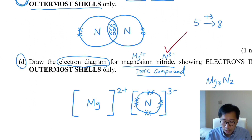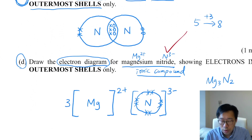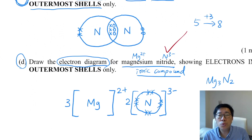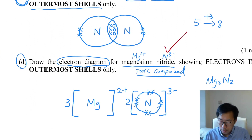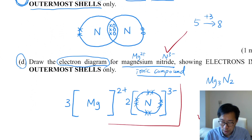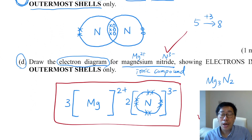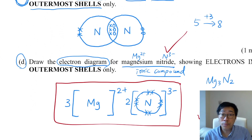After drawing the cation and the anion, it is still not finished. You have to show the ratio. As the formula for magnesium nitride is Mg3N2, you put 3 here meaning 3 Mg2+, and 2 here meaning 2 N3-. By doing this, you get the correct answer — the electron diagram of the ionic compound magnesium nitride, showing electrons in the outermost shells only.